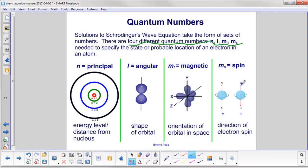One more quantum number: spin. That tells you the direction of the electron's spin, either clockwise or counterclockwise.